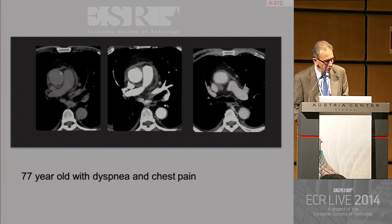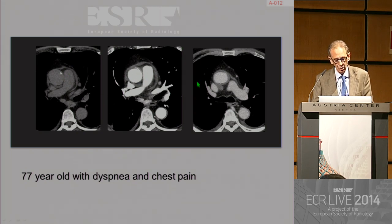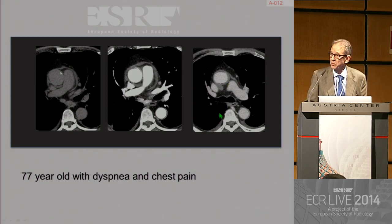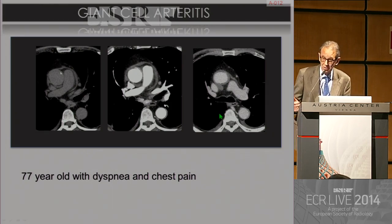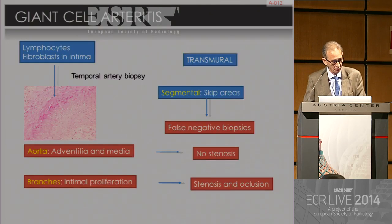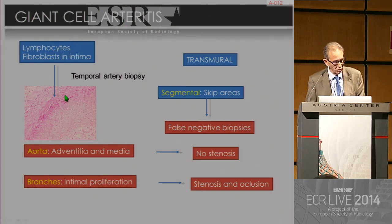Here is a 77-year-old patient with dyspnea and chest pain. We are seeing wall thickening and enhancement of the arterial wall in the late phase. This cannot be Takayasu because she's 77 years old — this is giant cell arteritis for that reason, and also because it is a more common disease. Giant cell arteritis is pathologically very similar to Takayasu.